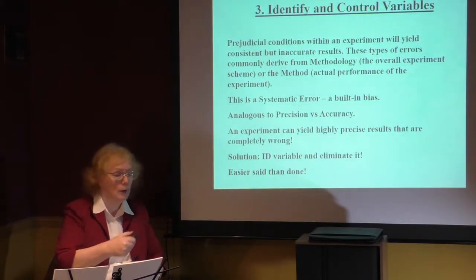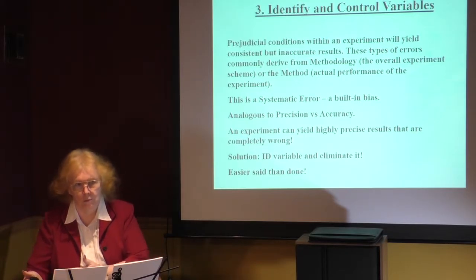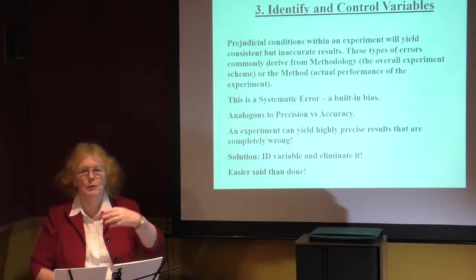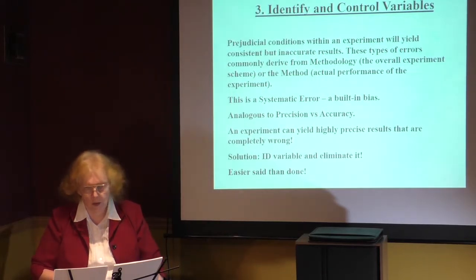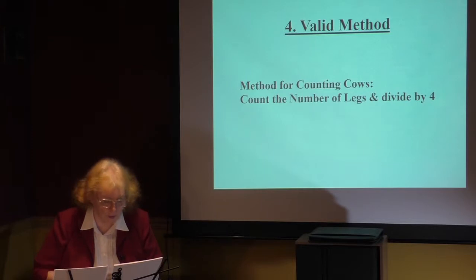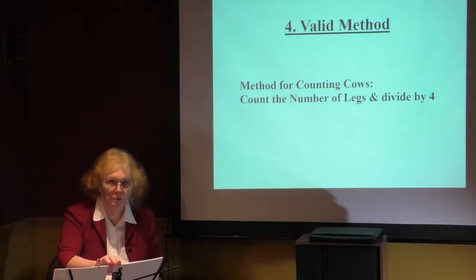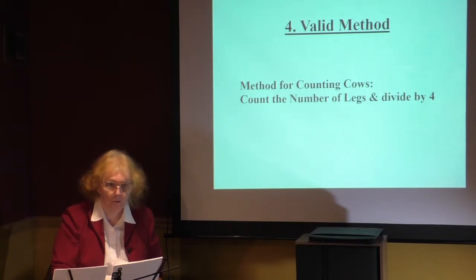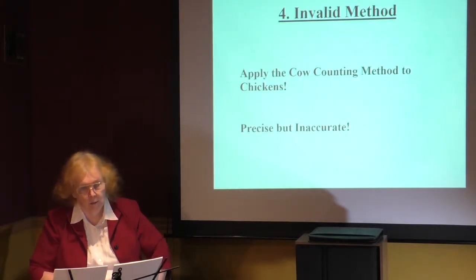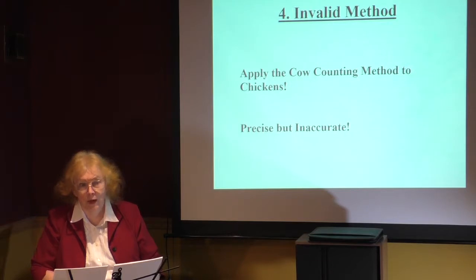You just worked long and hard to develop this experiment where you thought you'd eliminated all errors. So how do you go back into it and find the error you didn't know existed? Someone else has to come in and ask, 'Did you think about this?' So now we have a whole group of people involved. Systematic errors are a real pain. The method matters — how did you actually perform this experiment? Here's a wonderful example: a method for counting cows — count the number of legs and divide by four. Works. But if I find this method in the literature and apply it to counting chickens, I'm precise but not very accurate. I've built in an error.